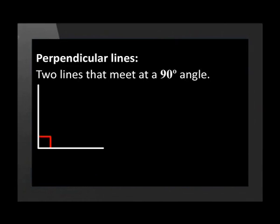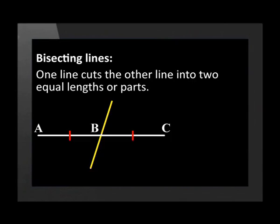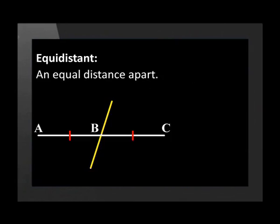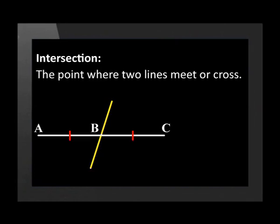Perpendicular lines are two lines that meet at a 90-degree angle. A small square between the two lines is the symbol used to show that the angle is 90 degrees. A bisected line occurs when a line cuts a line segment into two equal lengths or parts — in other words, it cuts the line segment in half. Points that are equidistant are an equal distance from another point — we can say that points A and C are equidistant from point B. A point of intersection is where two lines meet or cross.